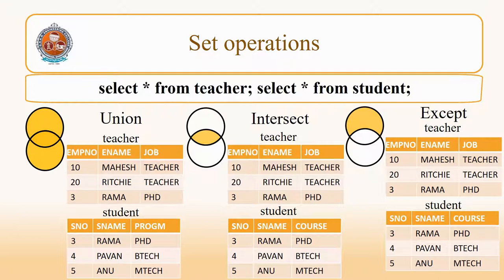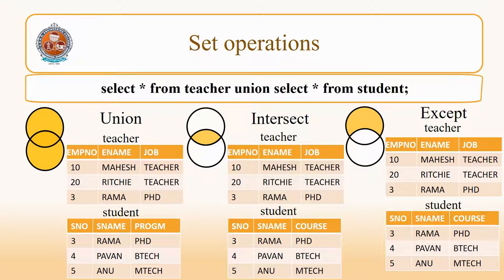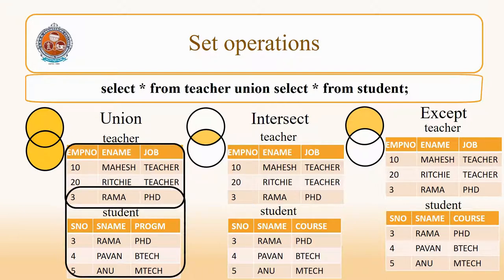For obtaining the data from the teacher table, you use SELECT * FROM teacher. For obtaining data from the student table, you use SELECT * FROM student. If you want the union of these two tables, you apply the UNION operator between these two queries. Then the results will be: 10 Mahesh, 20 Ritchie, 3 Rama (which comes only once), and then 4 Pavan and 5 Anu.